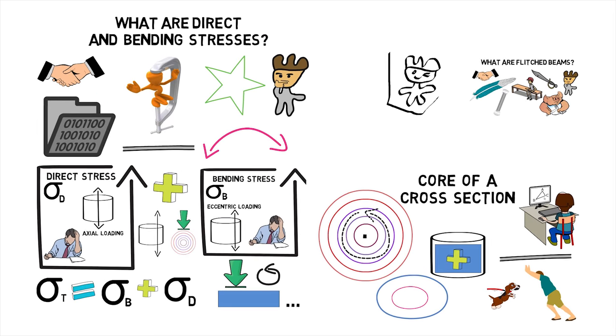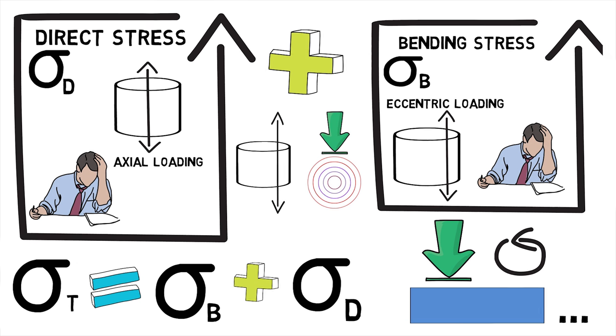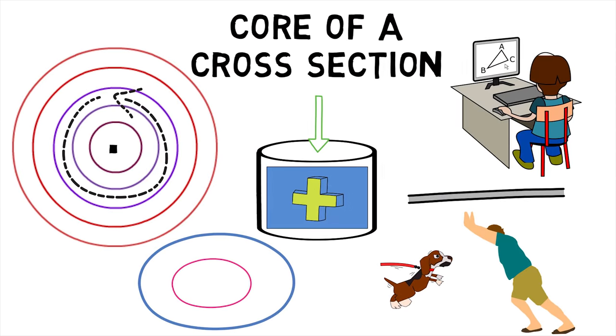Hence, we first saw what direct and bending stresses are and then went on to find out what core of a cross-section is.